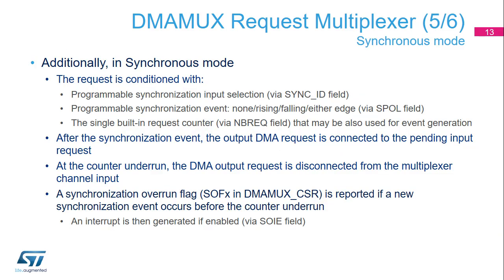In synchronous mode, the request is conditioned with a programmable synchronization input selection via the sync ID field, a programmable synchronization event (none, rising, falling, or either edge) via the SPAL field, and the single built-in request counter via the NBREC field, which may also be used for event generation. After the synchronization event, the output DMA request is connected to the pending input request. At counter underrun, the DMA output request is disconnected from the multiplexer channel input. A synchronization overrun flag SOFX in DMA MUX CSR is reported, and if a new synchronization event occurs before counter underrun, an interrupt is generated if enabled with the SOIE field.